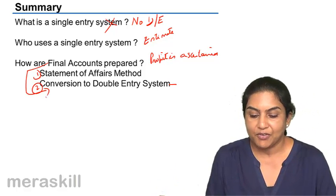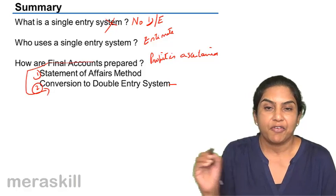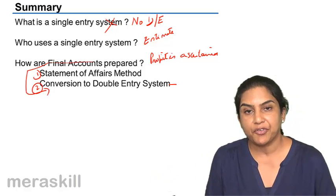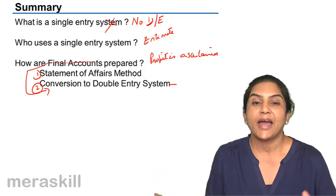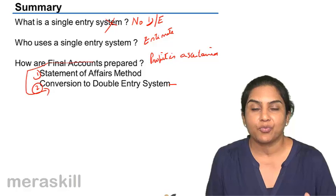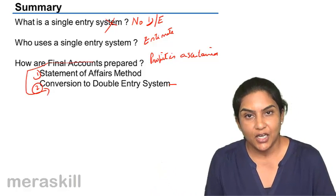But under statement of affairs method, frankly, we do not prepare final accounts. What do we do under the statement of affairs method? We compare the closing capital with the opening capital. And we say the increase in such capital would be profit. If there is a decrease in the capital, that's a loss.